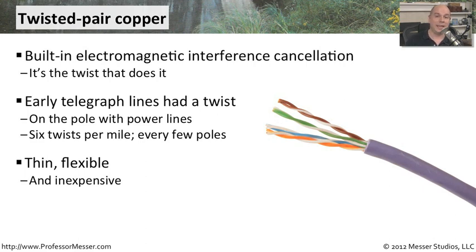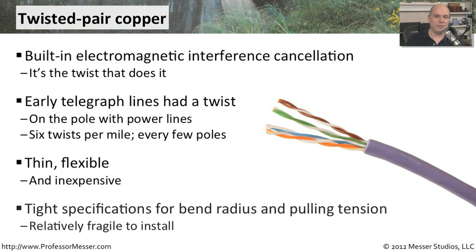Twisted pair cabling is very thin, very flexible, and we can put it in a lot of different places. It's not very expensive to implement. There are very tight specifications, though — you can't pull on it very hard, and you can't take it around sharp corners; there's a specific bend radius associated with it. You have to make sure you have a professional who understands the limitations on these very fragile copper wires in twisted pair cabling.